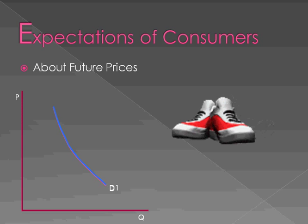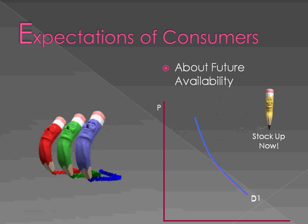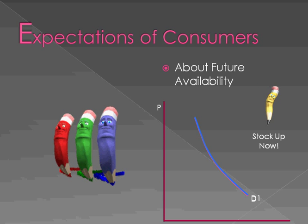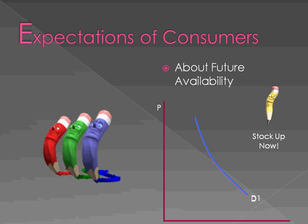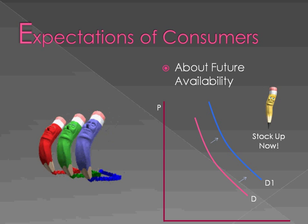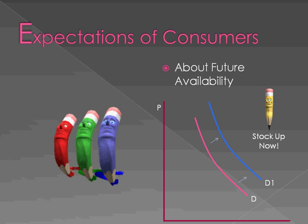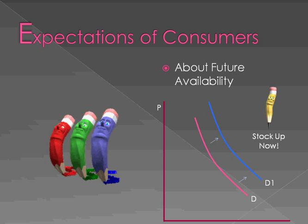How about price expectations — what consumers feel about future prices? If we think that prices are going to go up in the future, we're going to buy more now to save money, so our demand will increase. Similarly, if an item isn't going to be available in the future — maybe they're not going to make colored pencils anymore — we're going to stock up now. The same applies if something is on sale now and we think it's going to go up, considering both price and availability.